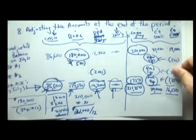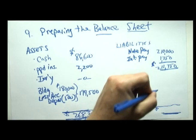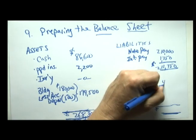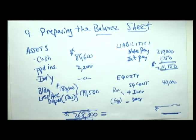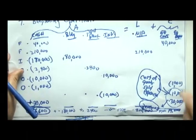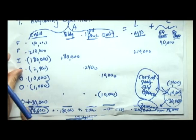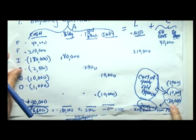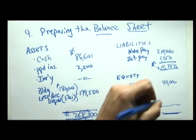Our equity contributed by the owner is forty thousand. Our revenues — recalling from lesson seven we sold all of our bikes for thirty thousand — so revenues add thirty thousand to equity.